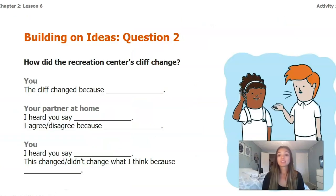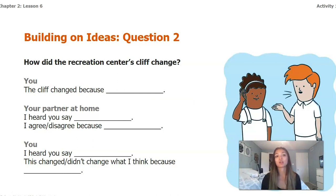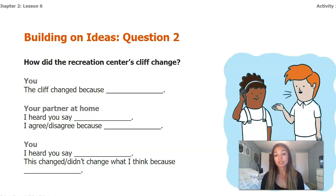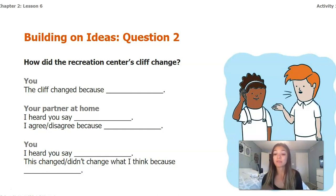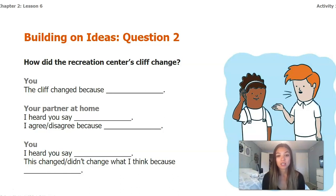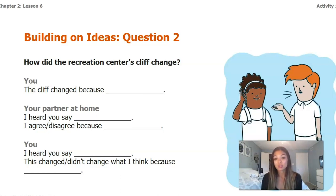We're going to repeat that same three-step process with another question. Remember: you state your idea, your partner repeats what you said and agrees or disagrees, then you repeat what your partner said and tell them if it changed your mind. Our second question is: how did the recreation center's cliff change? Go ahead and pause the video and use the sentence stems to answer the question with somebody at home.